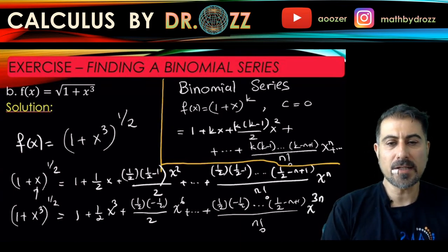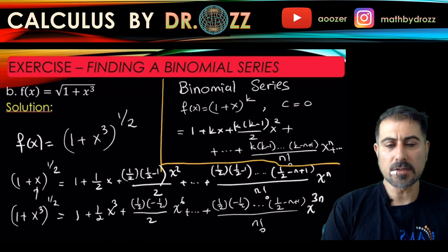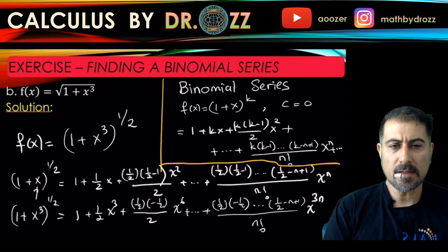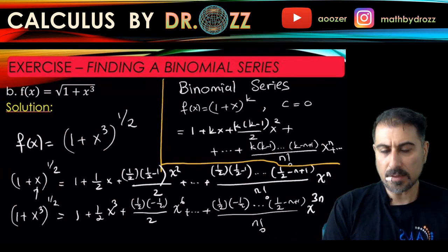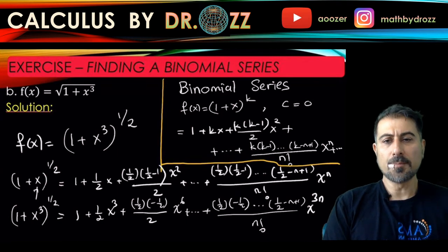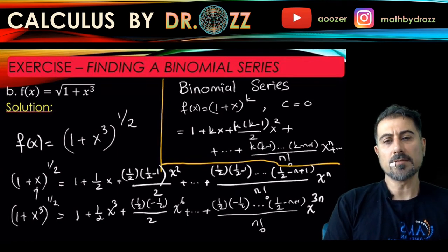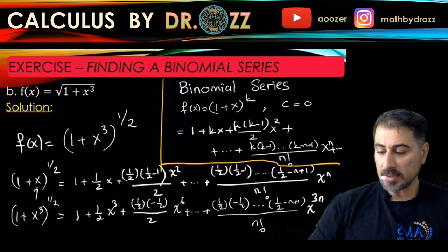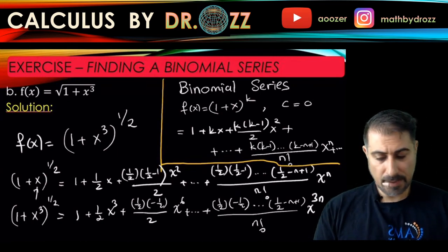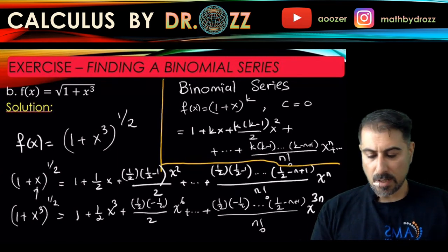You can go ahead and find a general pattern to represent this long sum in terms of just one summation. But I think at this moment you can just pause here, and that's a good enough representation to put the power series or binomial series of f in this form. I think that's more than enough. That ends part b.